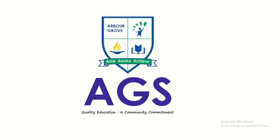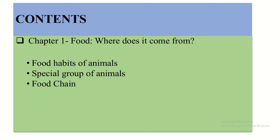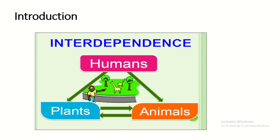Hello students, hope you all are doing well. Last week we started the first chapter, Food: Where Does It Come From? We have already discussed some contents. Today I am covering the remaining contents: food habits of animals, special groups of animals, food chain, and interdependence — how humans, animals, and plants are dependent on each other.